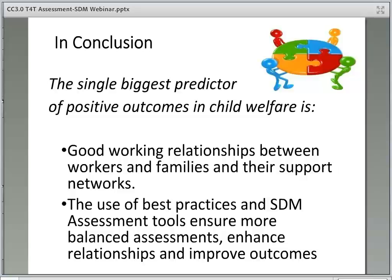When all is said and done, the single biggest predictor of positive outcomes in child welfare, according to a study by Farmer and Owen, is not the services or the interventions — it is the relationships we build. Without good working relationships between social workers and the children and families they serve, everything else gets much more difficult. Building relationships with the support network, including family members and other collaterals, is also important and helps support the child's safety and well-being. When we talk about relationships, we are talking about making sure families understand what is going on, giving them choices, being transparent, saying what we mean, and doing what we say we will do. When we start with the assumption that relationships are key, it causes a shift in how we need to think about assessment.